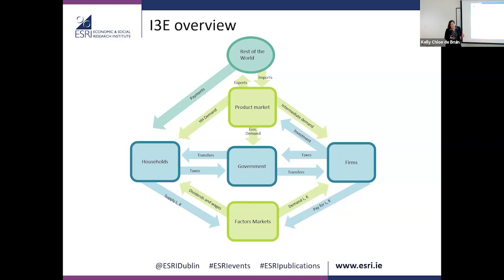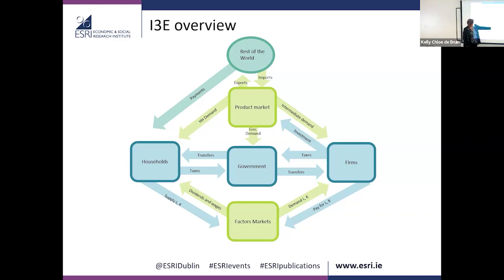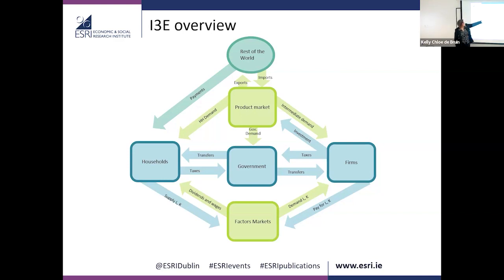The main point of the CGE model is that all these agents interact with each other simultaneously. Households supply labour and capital to factor markets, receive dividends and wages, demand goods from product markets, pay taxes and receive transfers from government. Firms demand labour and capital, pay taxes, receive transfers, and demand intermediate goods and investment from product markets. Government collects taxes, pays transfers, and demands goods. The rest of the world provides imports and exports into the product market. All happening simultaneously to create equilibrium.